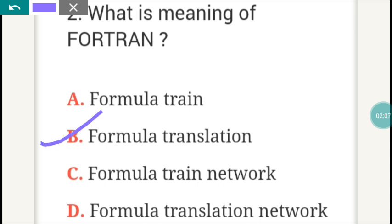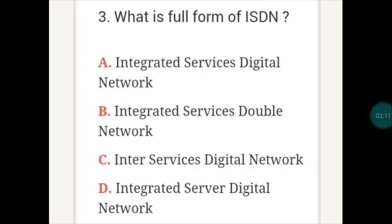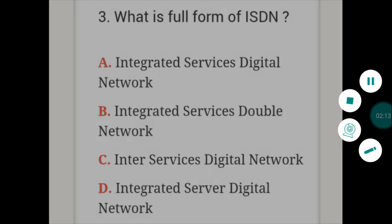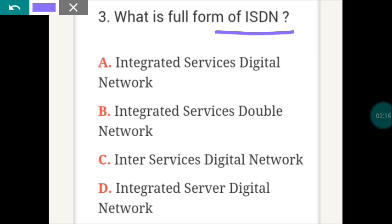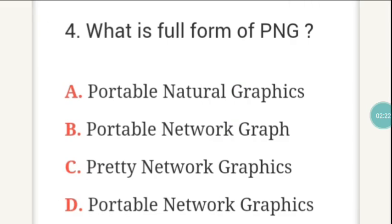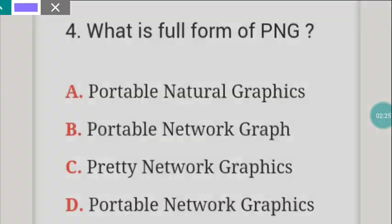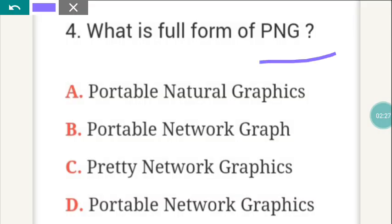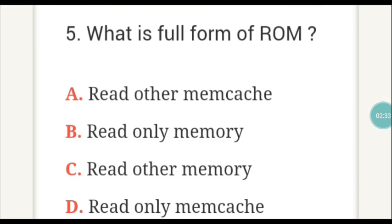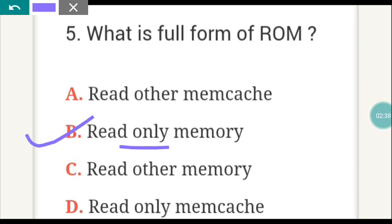What is the full form of ISDN? ISDN is the full form of Integrated Services Digital Network. The next question: what is the full form of PNG? PNG stands for D — Portable Network Graphics. What is the full form of ROM? ROM is B — Read Only Memory.